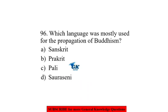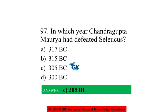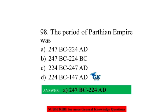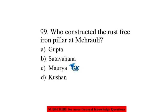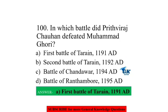Which language was mostly used for the propagation of Buddhism? Pali. In which year did Chandragupta Maurya defeat Seleucus? 305 BC. The period of the Parthian Empire was 247 BC to 224 AD. Who constructed the rust-free iron pillar at Mehrauli? The Guptas. In which battle did Prithviraj Chauhan defeat Muhammad Ghori? The First Battle of Tarain in 1191 AD.